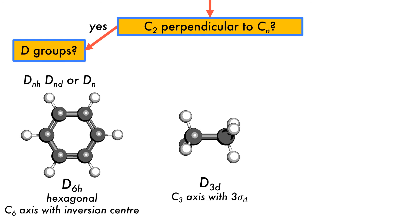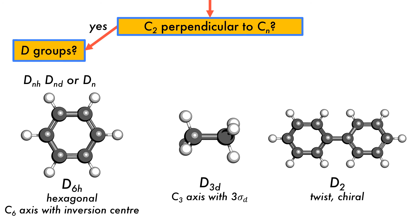Ethane, with the D3D point group, represents the DND systems, and the final D group, Dn, is represented here by biphenyl, which has a twisted geometry and is a chiral molecule.